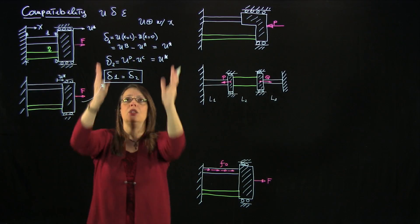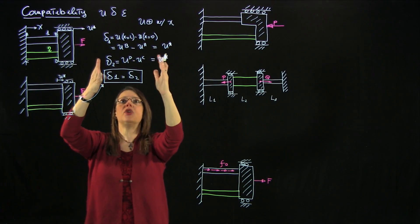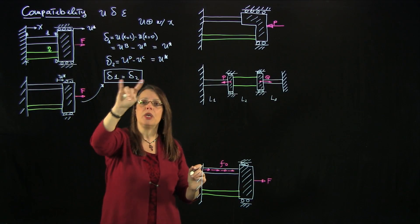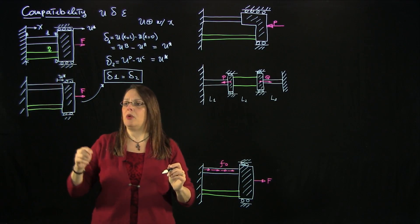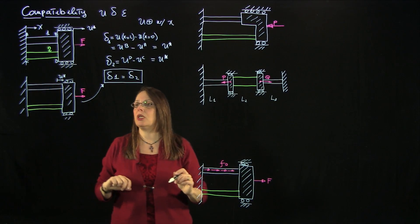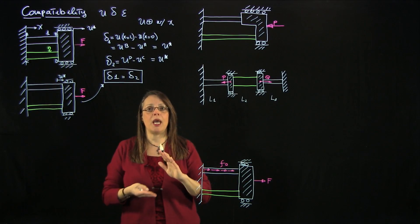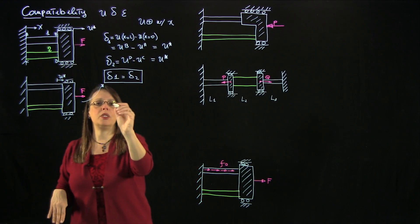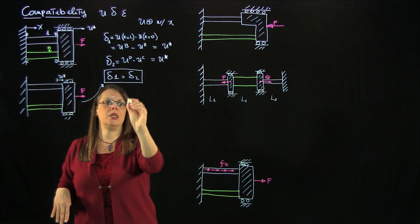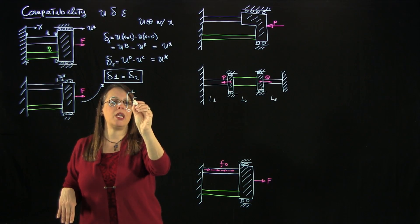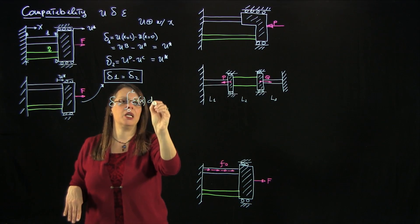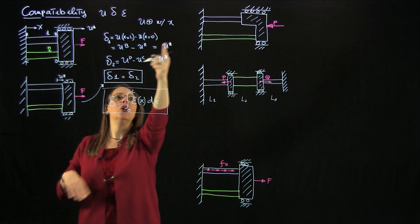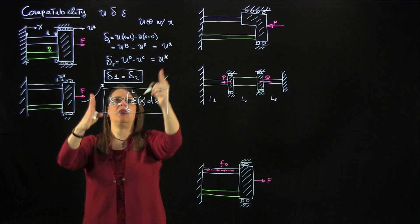To obtain this in terms of compatibility: compatibility equations relate elongation to displacements, and from these equations you can directly get an equation connecting the two elongations. The other thing you can do is get a relationship between the strains in the two bars. Remember that you can always write the elongation as the integral of the strain as a function of position along the bar in dx — this relationship always works, where L is the length of the bar.